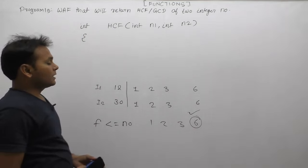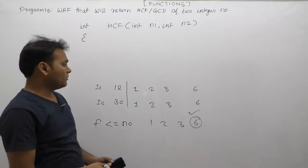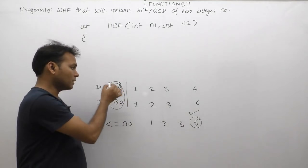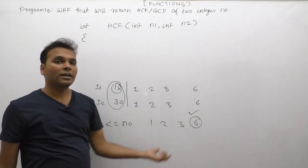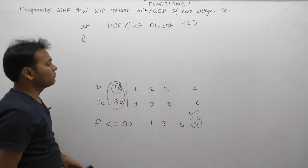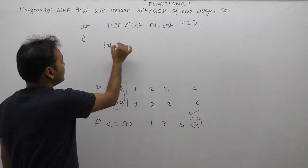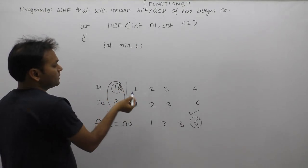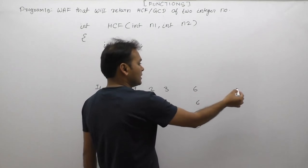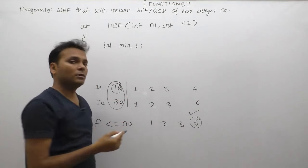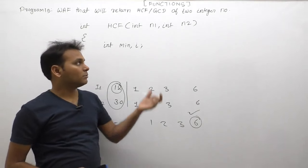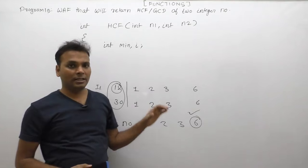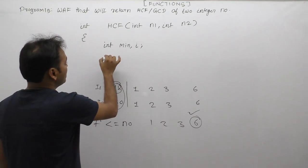In this case, the common factor of two numbers will always be less than or equal to the minimum of the two numbers. Between 12 and 30, the minimum is 12, so any common factor will be less than or equal to 12. To find the minimum, we need an extra variable. A loop is required to iterate, and we will start dividing from the minimum value.